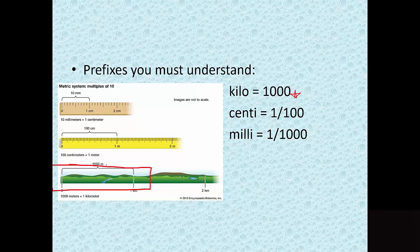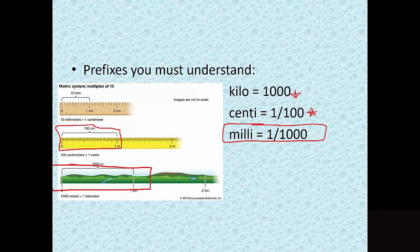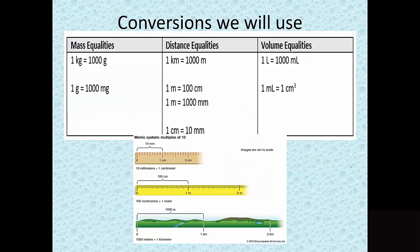Prefixes you should understand: 'kilo' means one thousand, so a kilometer equals one thousand meters. 'Centi' means one one-hundredth — one meter is made up of one hundred centimeters, like a century is 100 years. 'Milli' means one one-thousandth — ten millimeters equals one centimeter, and one meter has one thousand millimeters.